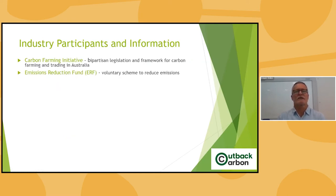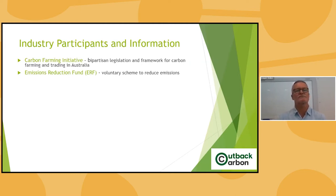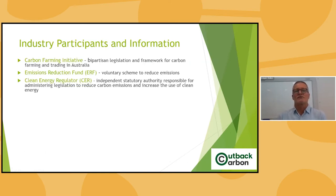The Emissions Reduction Fund was set up by the Abbott government — the ERF. $2.55 billion in taxpayer funds was set aside as a voluntary scheme set up to reduce emissions, and to basically pay through a reversed auction purchase scheme for carbon credits. That's now morphed into what they call the Climate Solutions Fund, and another $2 billion has been set aside for that. The Clean Energy Regulator is the independent statutory authority that administers everything to do with the Carbon Farming Initiative legislation, set up to help reduce emissions and increase the use of clean energy.